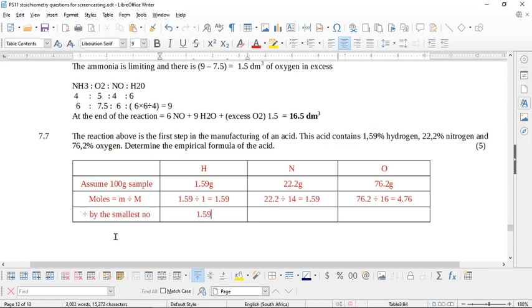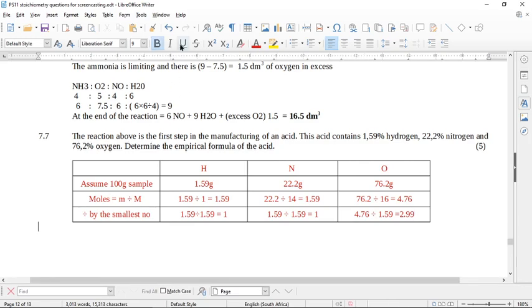Now, we must divide by the smallest number. So, this is going to be 1.59 divided by 1.59, because you can see that's the smallest number. And then this is going to be 1.59 divided by 1.59. That's going to give you 1 again. And then we've got 4.76 divided by 1.59, which is going to give you 2.99, which is basically 3. Are we finished? No, we are not finished, genius. What are we going to say? We are going to say empirical formula equals H, and there's 1 H, and there's 1 N, and there are 3 oxygens. And if we don't do this, we lose the last mark, and your teacher gets extremely irritated with you. So, there we go. There is the empirical formula, and it is indeed nitric acid, which your instincts should have told you in the beginning.